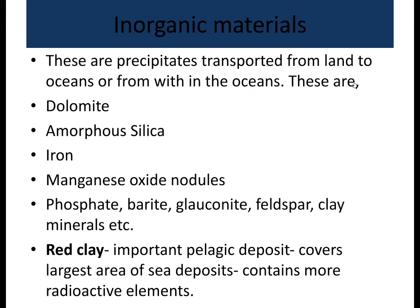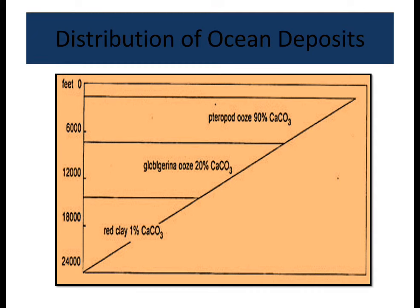Inorganic materials are precipitates transported from land to oceans or from within the oceans. These include dolomite, amorphous silica, iron-manganese oxide nodules, phosphate, barite, glauconite, feldspar, and clay minerals. Red clay is an important pelagic deposit that covers the largest area of sea deposits and contains more radioactive elements.